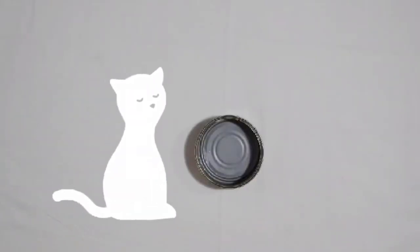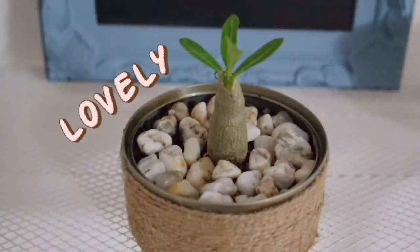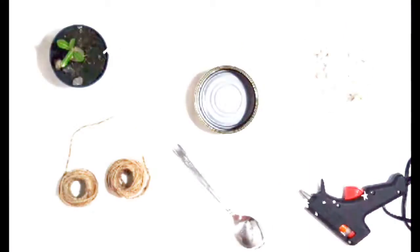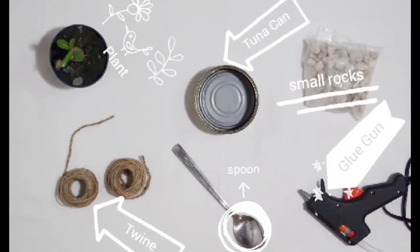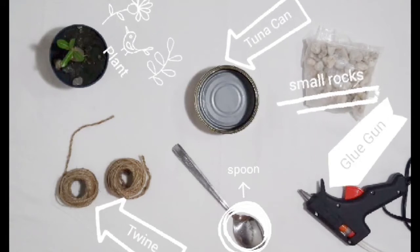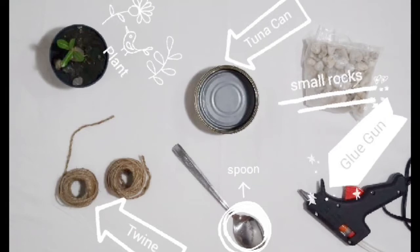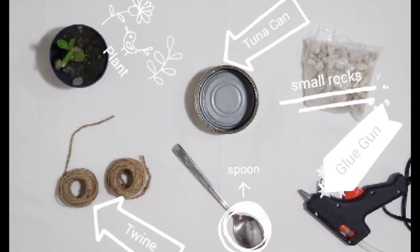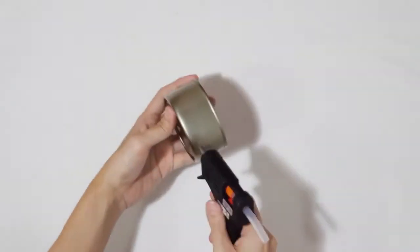Hey martians, in this video we are going to transform this boring tuna can into this lovely planter. Here's what we need: of course an empty tuna can, glue gun, small rocks, twine, plant of course, and a spoon.